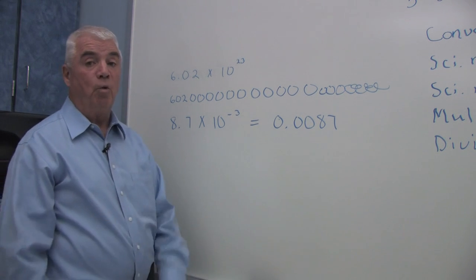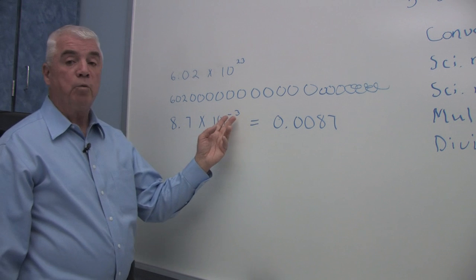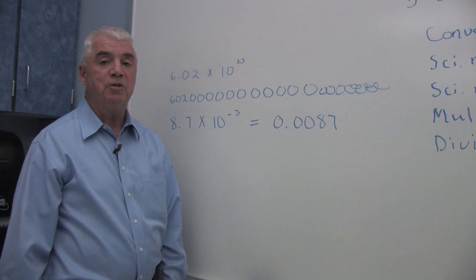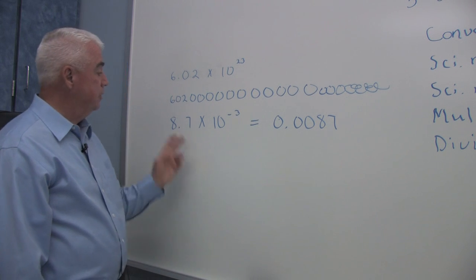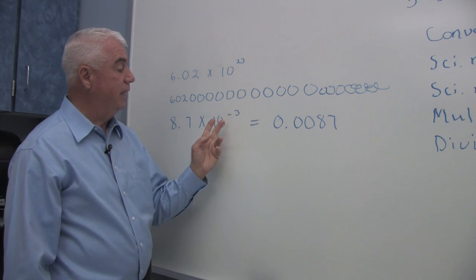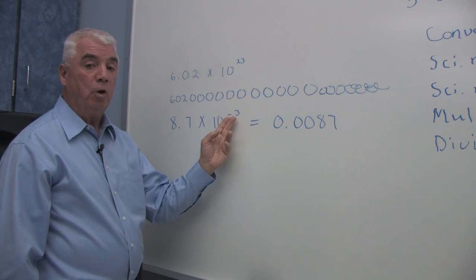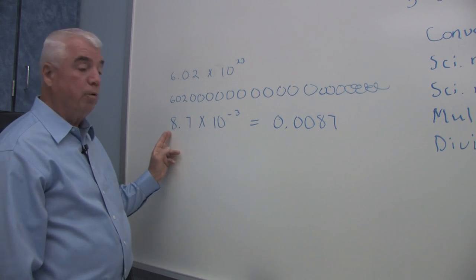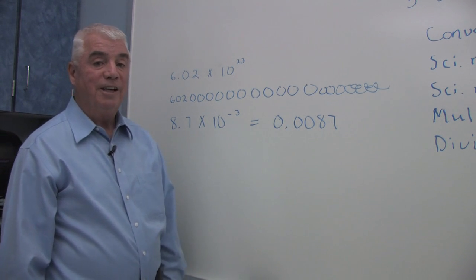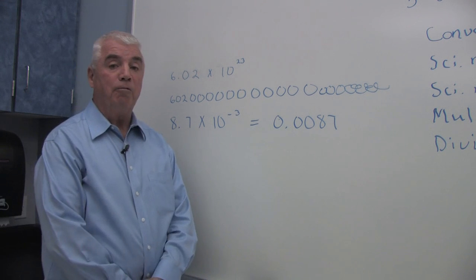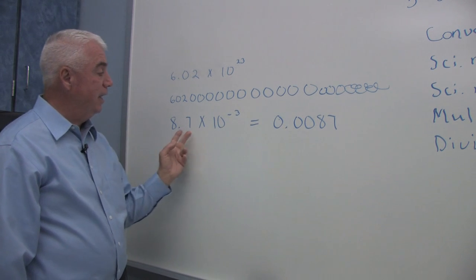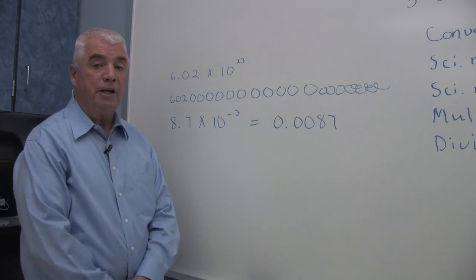If I had a number that was less than 1, then this exponent would be negative, and again the exponent indicates the number of places that the decimal should be moved. So if I have a number 8.7 times 10 to the minus 3, it's telling me the true position of the decimal lies 3 places to the left. If I were to move it in front of the 8, I'd need two more zeros to express that in regular form. These two numbers are equivalent.